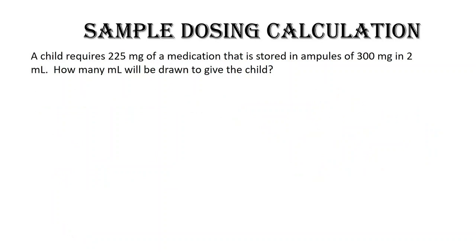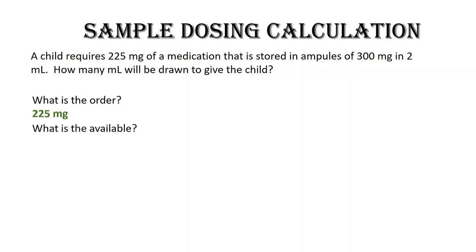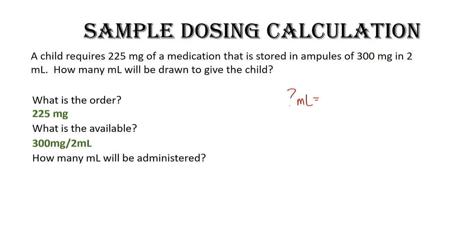Now you're going to try this example on your own. A child requires 225 milligrams of a medication that is stored in ampules of 300 milligrams and 2 milliliters. How many milliliters will be drawn to give the child? Pause the video, solve the problem, and we'll come back and give you the answer. The order is 225 milligrams, and what we have available is 300 milligrams per 2 milliliters. The number of milliliters equals 225 milligrams times 2 milliliters over 300 milligrams, and we end up with 1.5 milliliters.